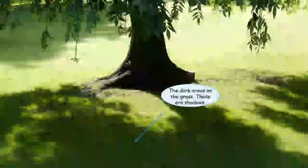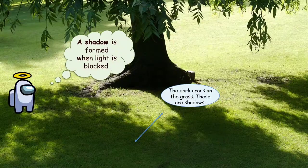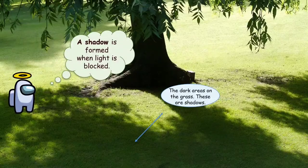Can you see the dark areas on the grass? How are they formed? When the trees block the sun's light, the dark areas are formed on the grass. These are shadows.